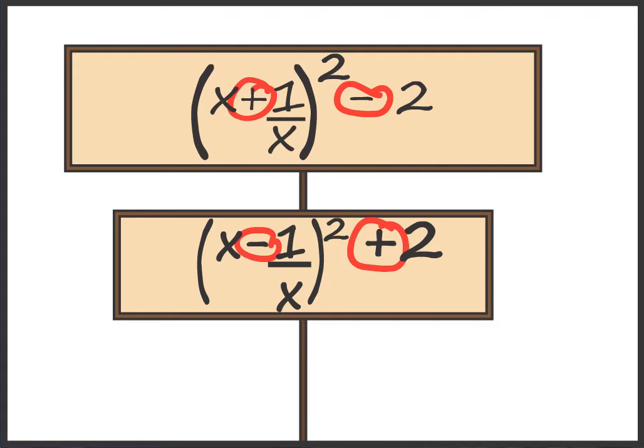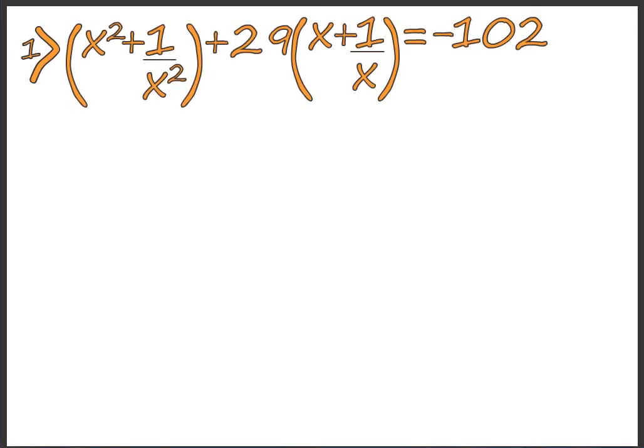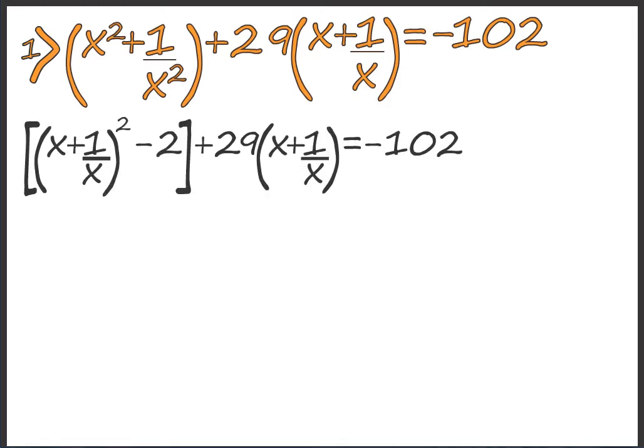Now let's start some examples. Looking at this question it might look difficult, but it is very easy to solve because we are going to make it very small. We first substitute the formula we learned: x squared plus 1 by x squared equals x plus 1 by x, whole squared, minus 2. By substituting we can see the result on the screen.